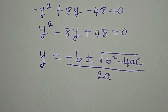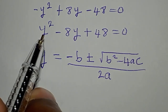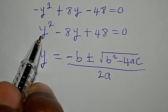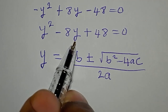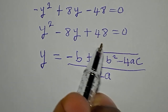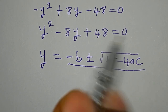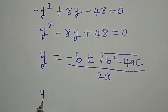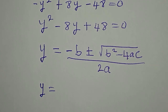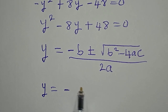Now you need to identify a, b, and c. Here, a is the coefficient of y squared, b is the coefficient of y, and c is the constant. So y equals, in place of minus b, I'm going to write minus...